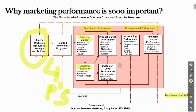We also have customer level performance, which refers to three measures: share of wallet, profitability, and lifetime value. Moving on to organizational performance, a fifth group is accounting performance, which includes sales revenue, revenue growth, cost, profit, margin, cash flow, and leverage. Finally, financial marketing performance is related more to the institutional domain of firms and companies, covering investor returns, equity risk, credit rating, and cost of capital.